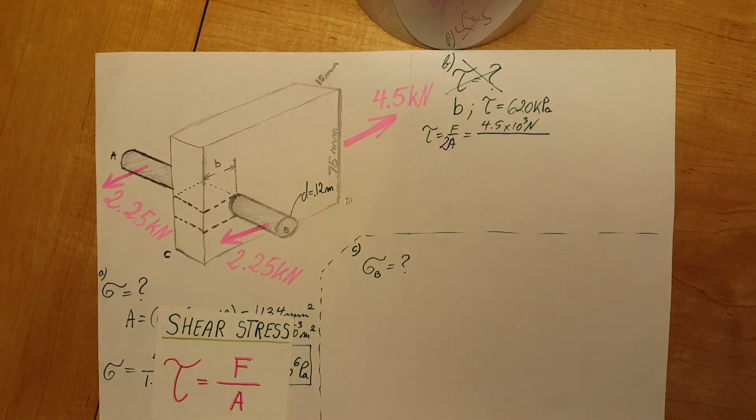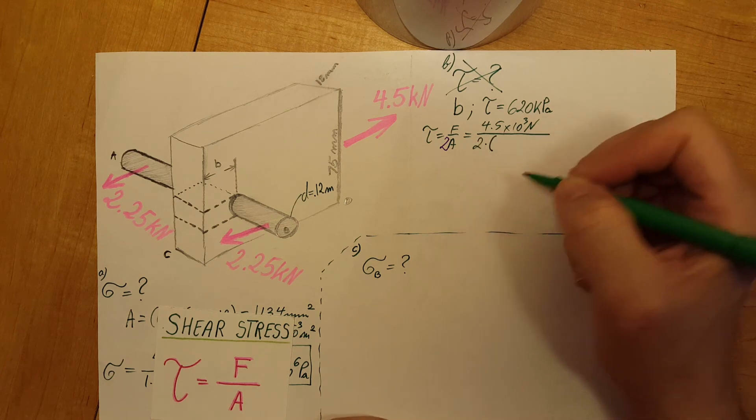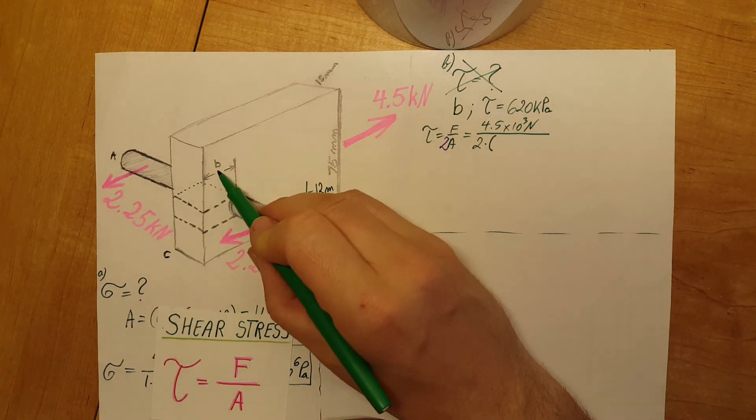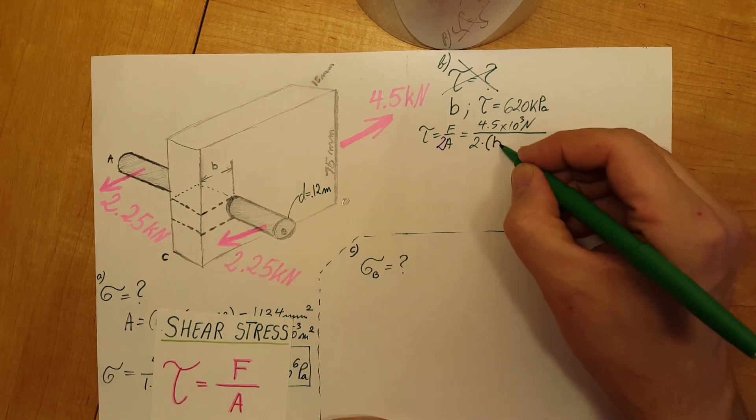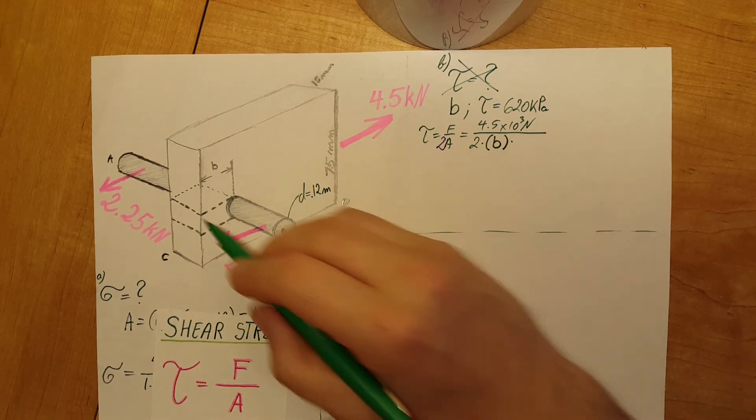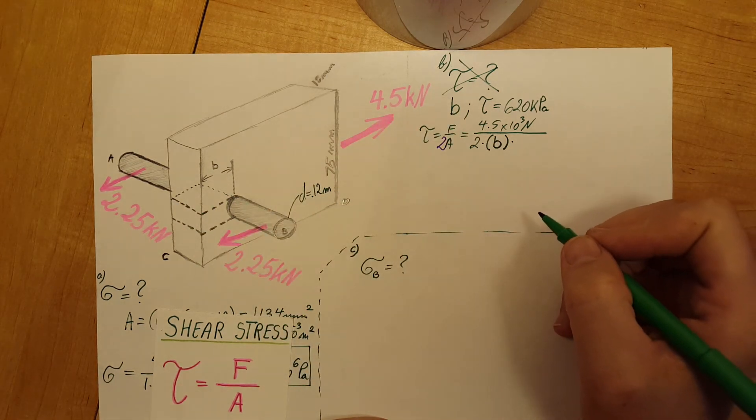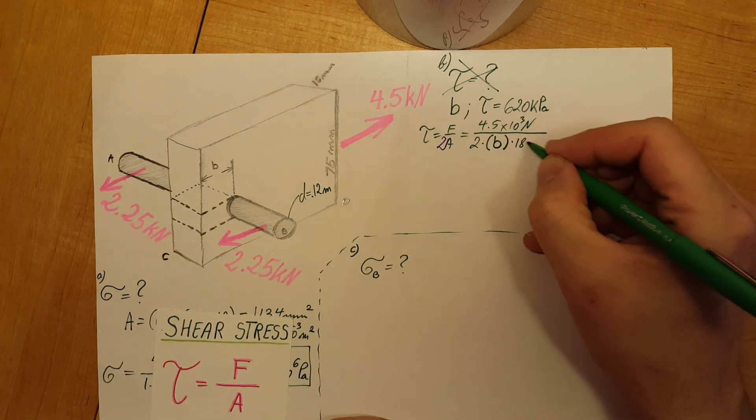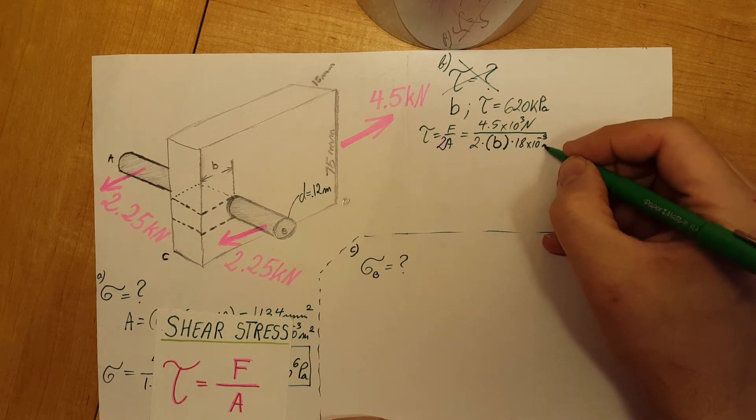I'm going to put a number two right here in front of our A, so we know that we need to consider both of those. Two times the area of our interest will be b, this side will be length of b, times the thickness of the wood which was given to us as 18 millimeters, so 18 times 10 to the negative 3 meters.